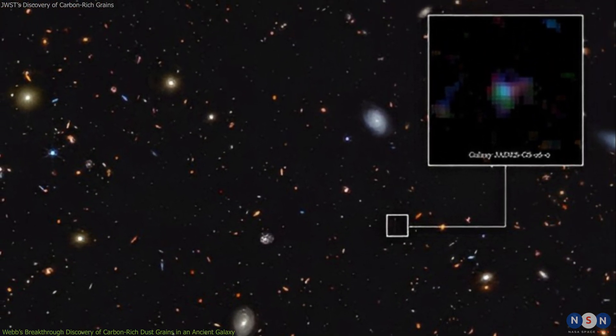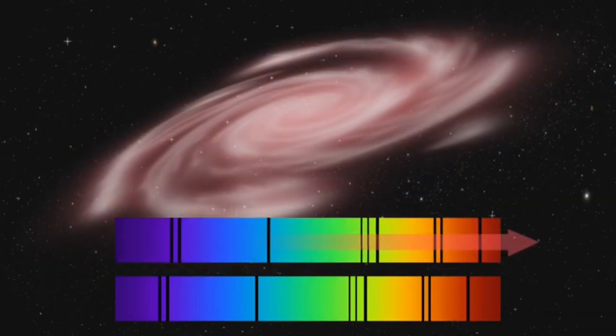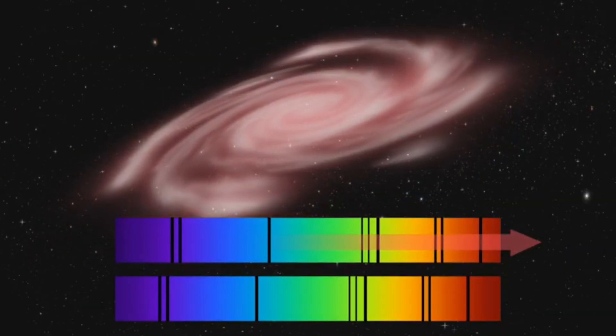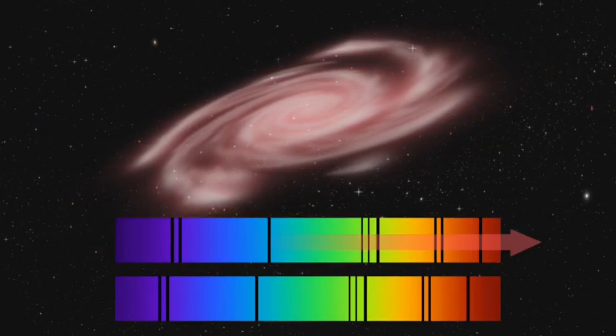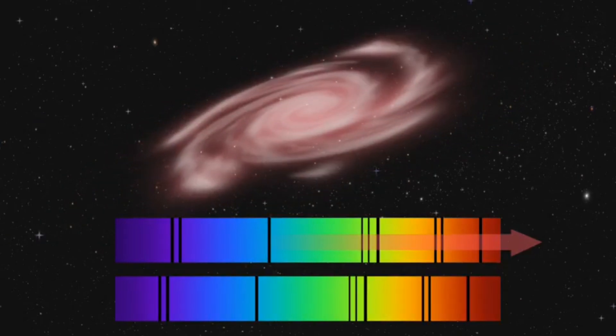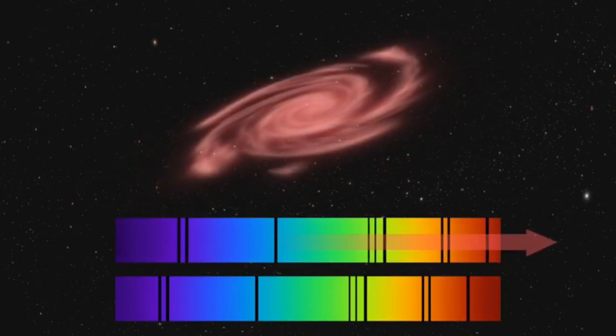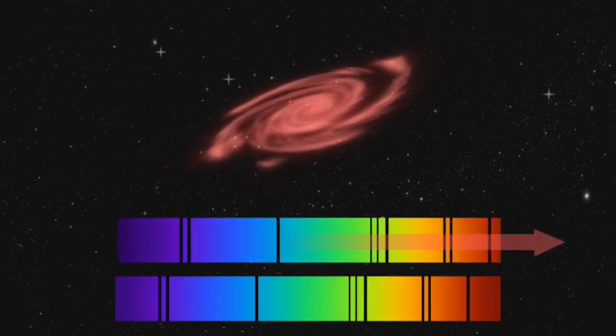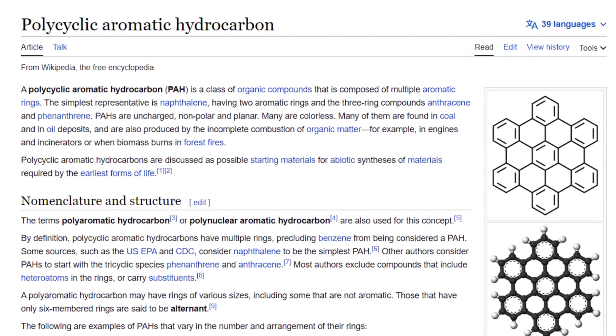The researchers used NIRSpec to measure the spectrum of this galaxy, which is called JADES-3D1. They found that it has a strong emission feature at a wavelength of 6.2 micrometers, which corresponds to a type of dust grain called polycyclic aromatic hydrocarbons.